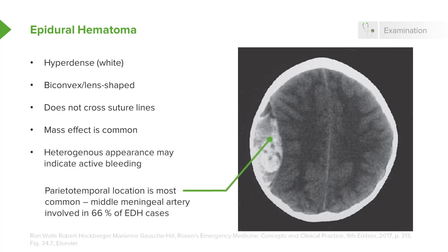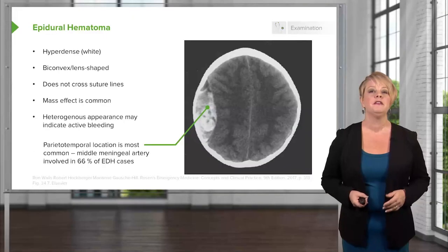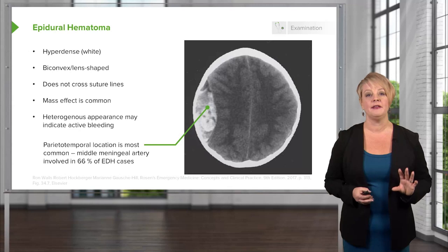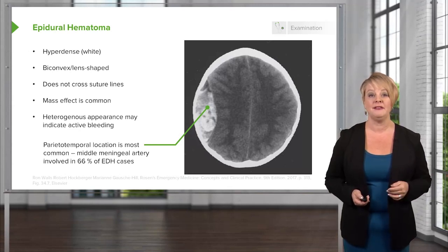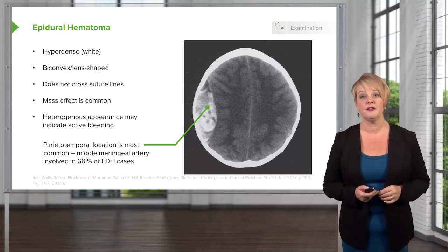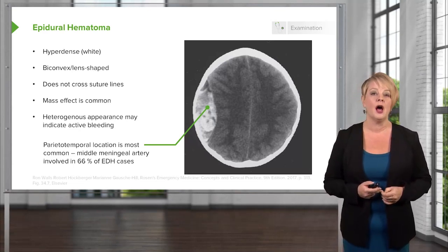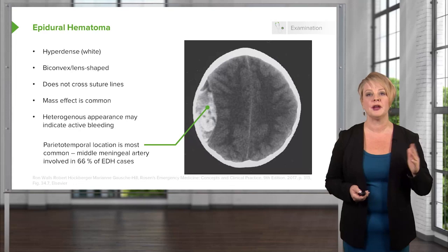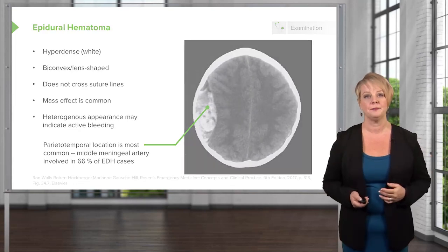It has a heterogeneous appearance, which suggests that there's blood of different ages in there. In the case of epidural hematoma, that can suggest active bleeding that is ongoing right now. This particular hematoma is in the parietotemporal region, which is the most common place we see epidural hematomas, most commonly associated with injuries to the middle meningeal artery — about two-thirds of cases occur in this region.